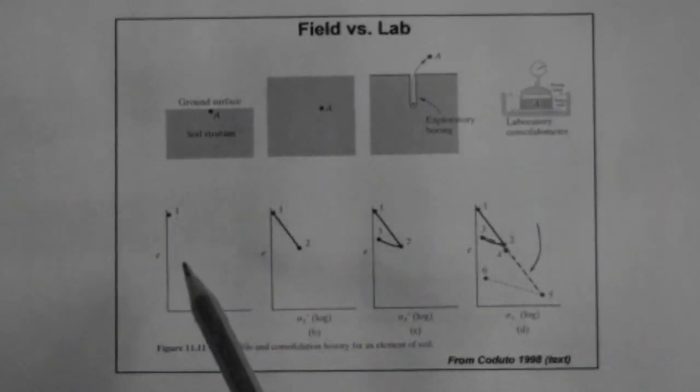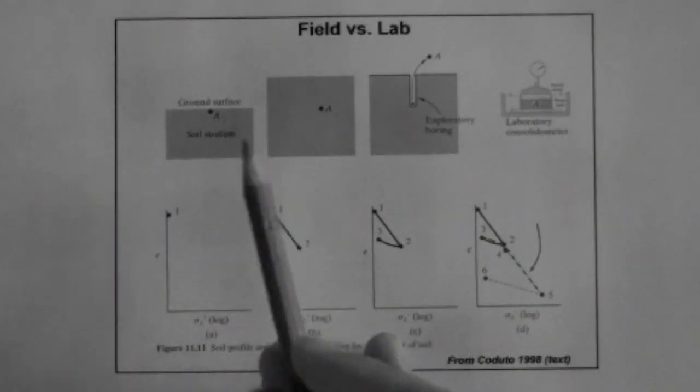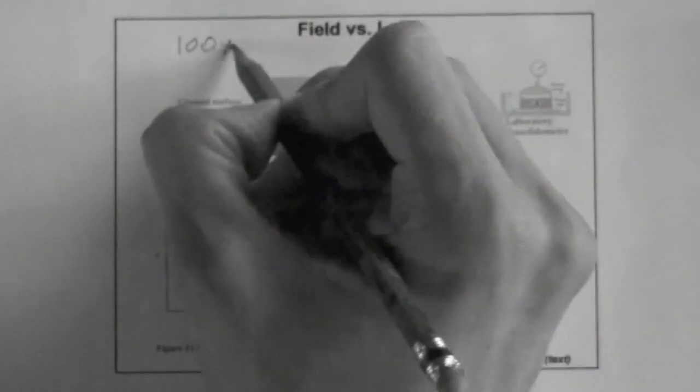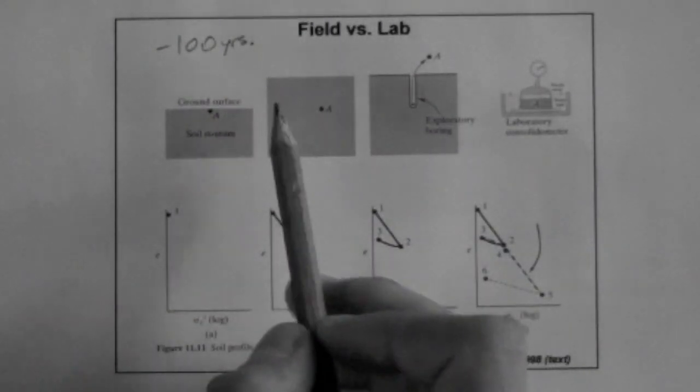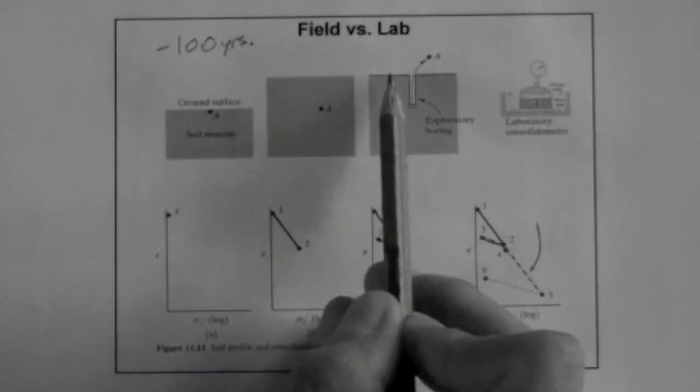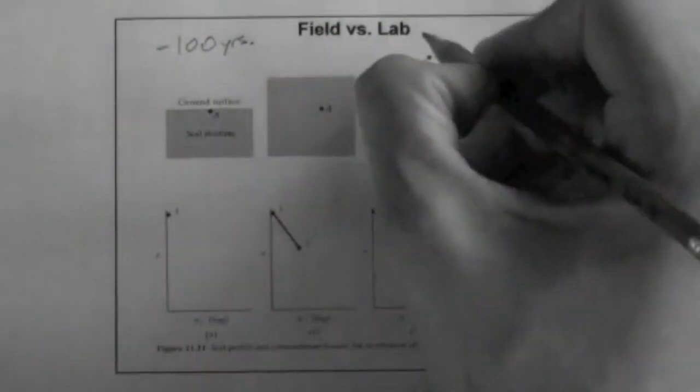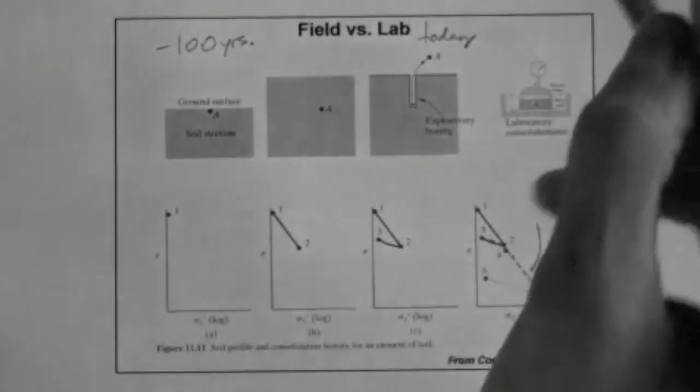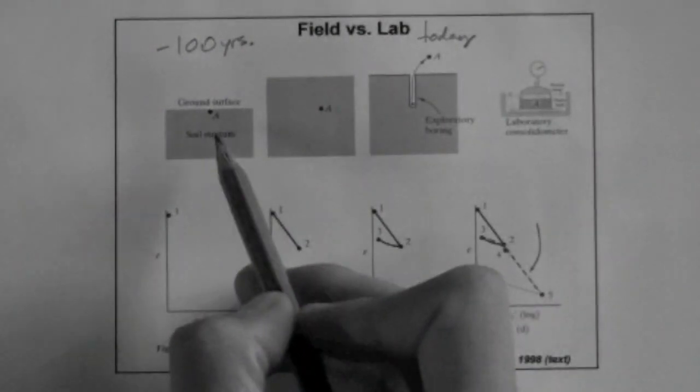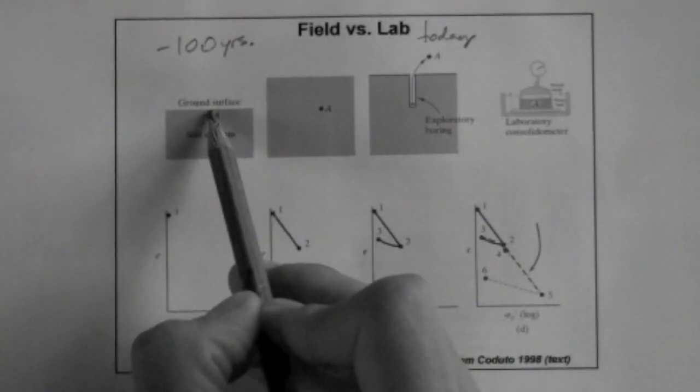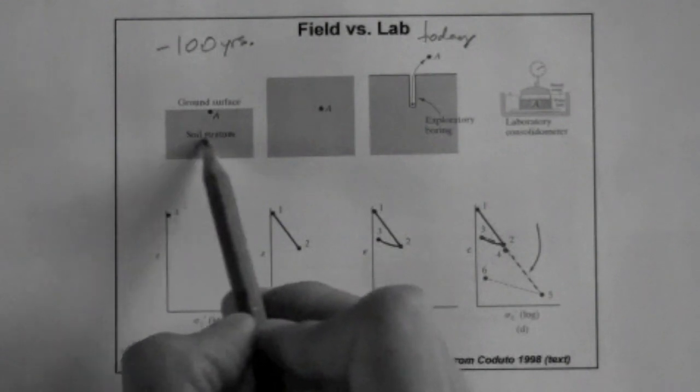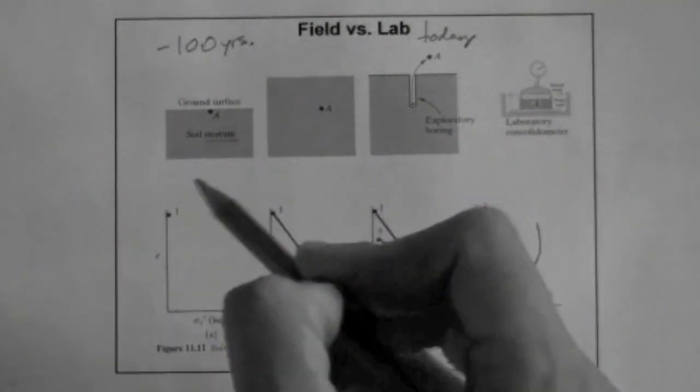So what we're going to do is we're going to go back in time. We are at a site, this is the site where we're going to construct, let's say, and we're going to go back in time for our site. So let's say that 100 years ago, our site was actually, the elevation of our site was actually lower than what it is now. This is today, but let's go back in time. So the ground surface is here, here's a point, and here's the soil stratum, that means layer, soil mass.